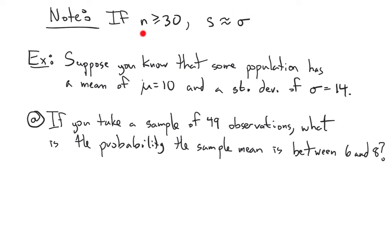So when you have a large sample, even if you don't know the population standard deviation, you can use the sample standard deviation as a stand-in. If n is small — less than 30 — this doesn't hold, and we'll learn how to deal with situations like that in the future.